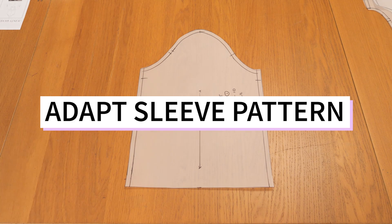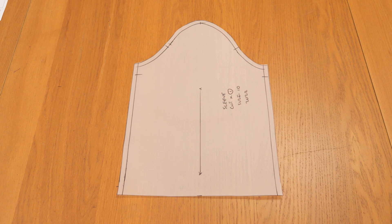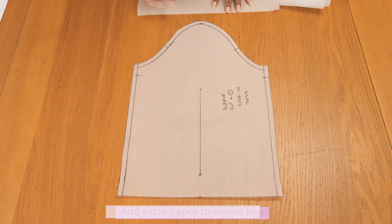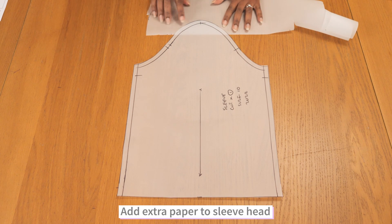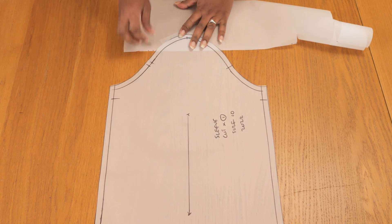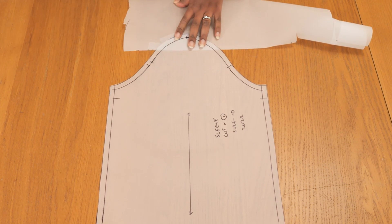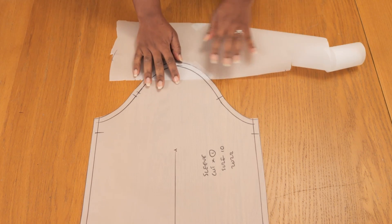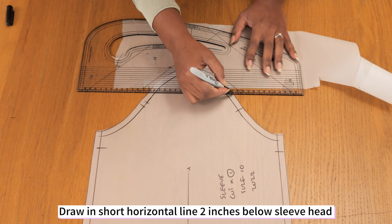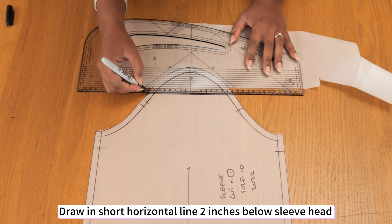So now that I have the traced off bodice and sleeve patterns, I'm going to start off with the sleeve to add on the point that this particular sleeve has. Now I have my basic sleeve here, which I've already added seam allowance to. I have my notches indicating my front and my back. And the first thing I'm doing is adding some extra paper to the top of the sleeve head.